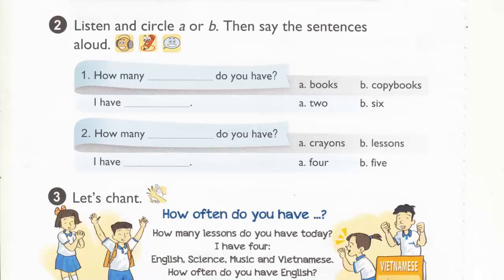Page 44, Activity 2. Listen and circle A or B. Then say the sentences aloud. How many books do you have? I have six. How many lessons do you have? I have four.